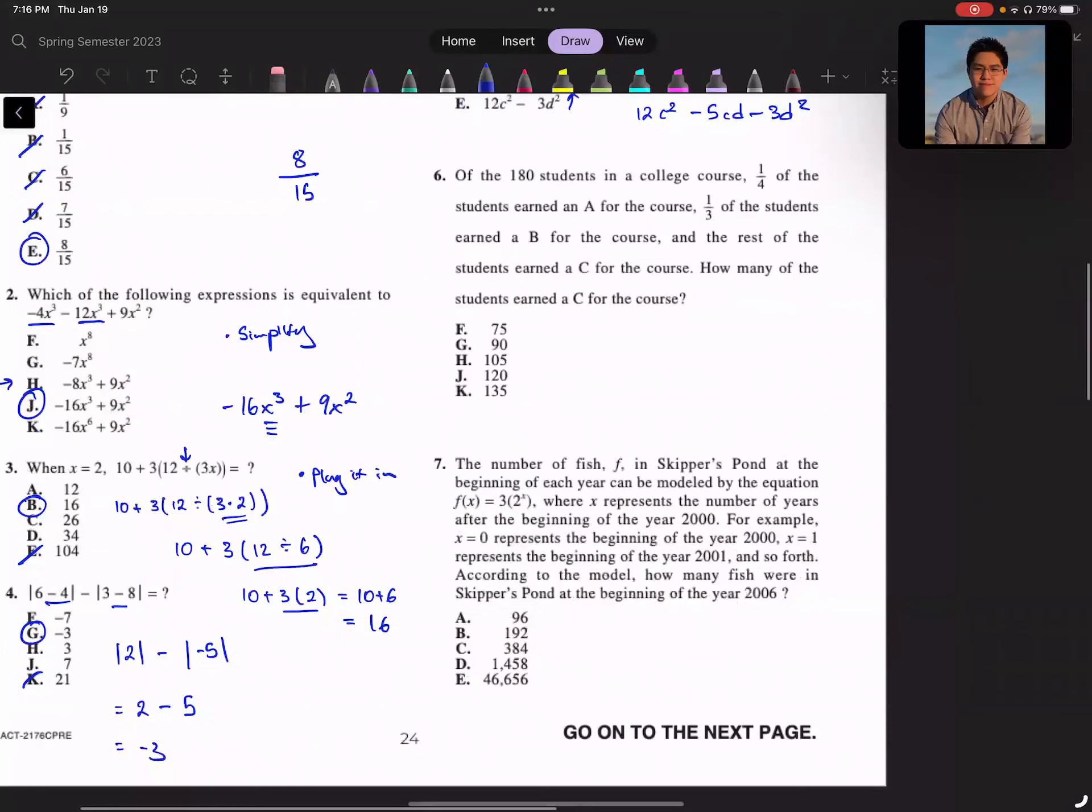Moving on to 6. Of the 180 students in a college course, one-fourth of the students earned an A for the course, one-third of the students earned a B for the course, and the rest of the students earned a C for the course. How many students earned a C? There's plenty of ways to do this, but the main question here is how many earned a C. So I'm thinking, okay, I know that a third got a B and a fourth got an A. So that means the rest of the people got a C.